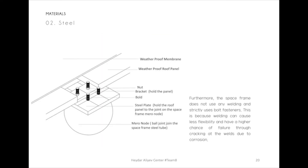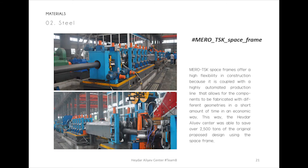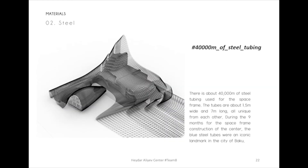Furthermore, the space frame does not use any welding and strictly uses bolt fasteners. This is because welding can cause less flexibility and have a higher chance of failure through cracking at the welds due to corrosion. Mero-TSK space frames offer high flexibility in construction because they are coupled with a highly automated production line that allows components to be fabricated with different geometries in a short amount of time in an economic way. This way, the Haidar Alive Center was able to save over 2,500 tons of the original proposed design using the space frame. There is about 40,000 meters of steel tubing used for the space frame.